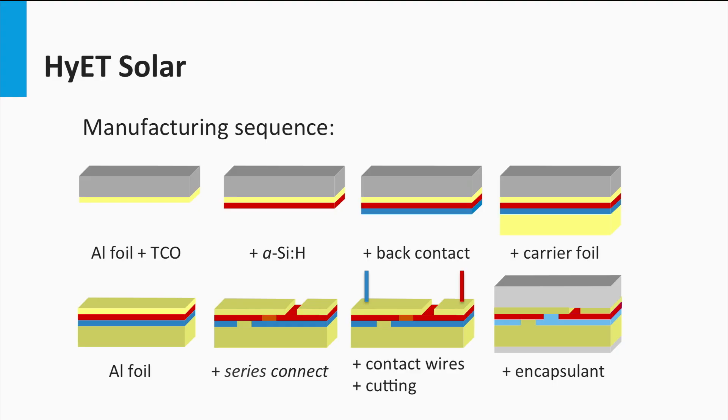Another advantage of thin film PV technology is that you have an option to deposit it on flexible substrates. Here I give an example of the HyET Solar company, who develops a technology that is deposited on a temporary aluminum foil. The entire solar cell is processed on the foil and encapsulated at the back side. Then the temporary substrate is etched away and the front side is encapsulated.